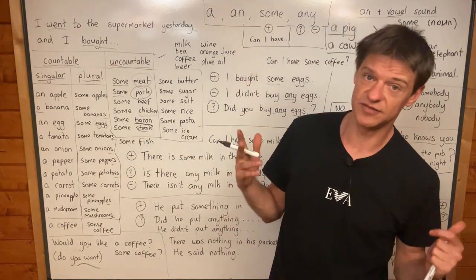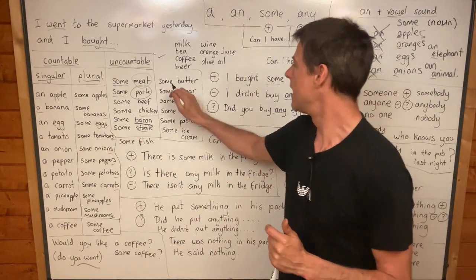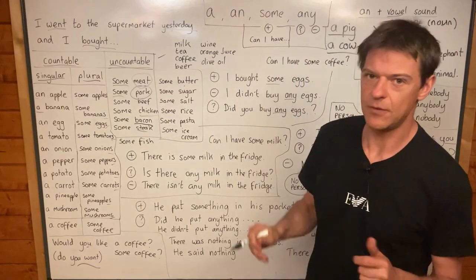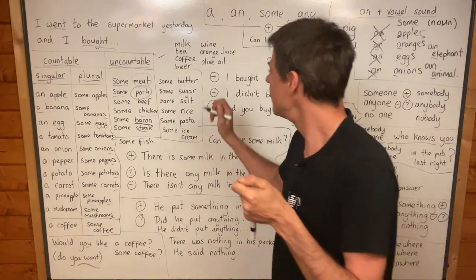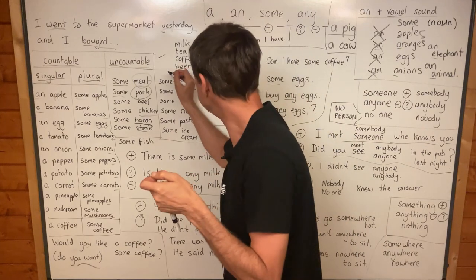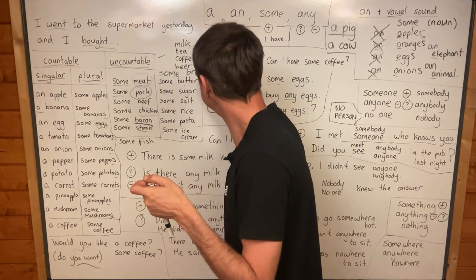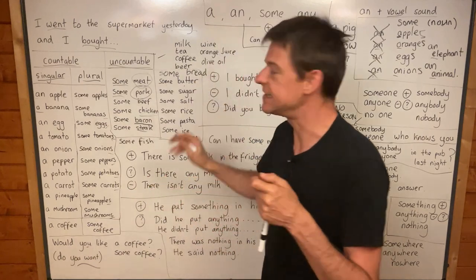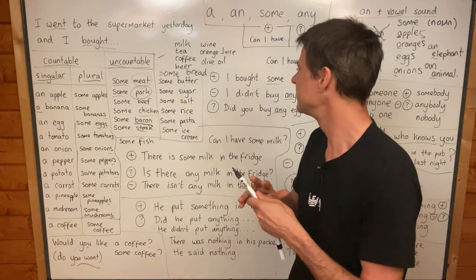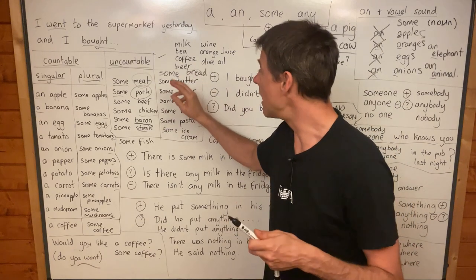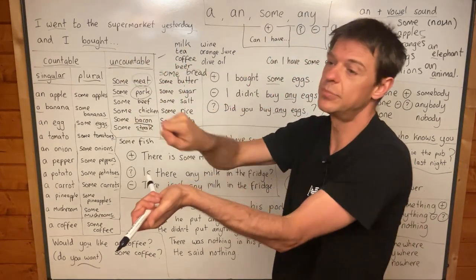Some steak — steak is from a cow. Some butter. We put butter on our bread, and we say some bread. Bread is uncountable — you don't say one bread, two breads, three breads. I went to the supermarket and I bought some bread and some butter.